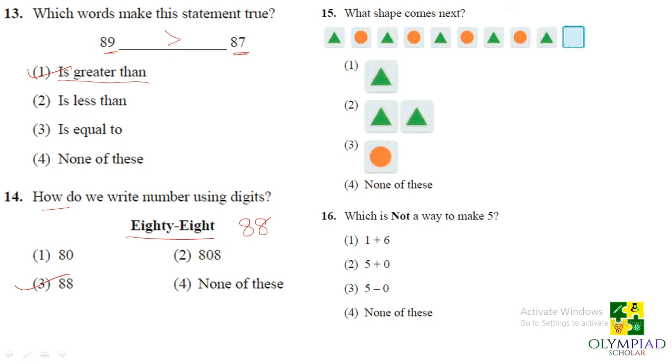So what shape comes next? So this is the easiest pattern. So like there is a triangle then circle, triangle, circle, triangle, circle, triangle then it has to be a circle. So option 3 you have got a circle.